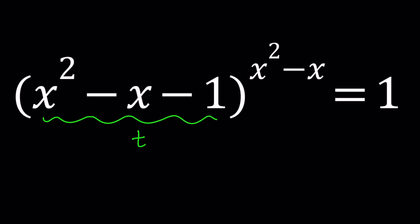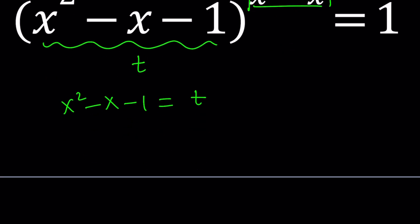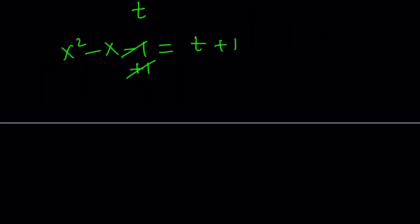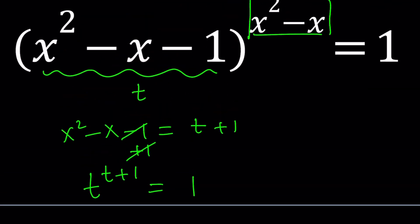So let's go ahead and call this whole thing t. That kind of turns our base into something much simpler. But not only that, if I call that t, this is just going to be one more than t or t plus 1. Because if you set x squared minus x minus 1 equal to t and add 1 to both sides, that's what you get. So the base and the exponent are related in a very interesting way.